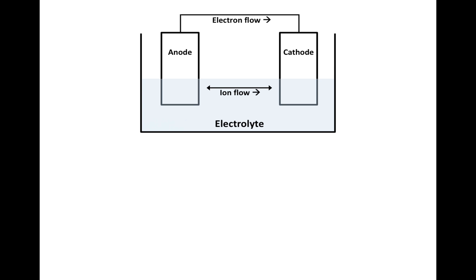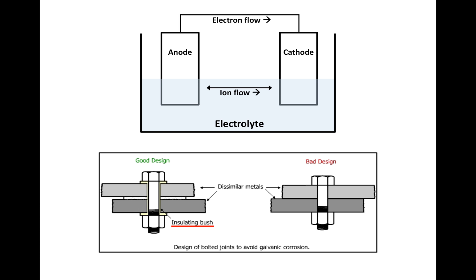What about eyelets? In this picture here at the top, we have our simplified galvanic cell and we have a direct connection between the anode and the cathode. And if we look at the good and bad designs below of two pieces of metal being held together with a bolt, on the right we have a bad design because they are in direct contact, whereas the one on the left there is an insulated bushing that separates the two metals from each other.